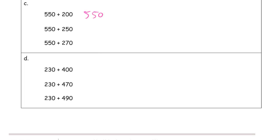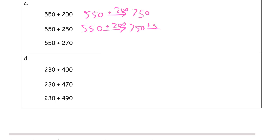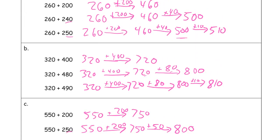550 plus 200 is 750. For 550 plus 250: add the 200 first for 750, then another 50 more. You'll see the two 50s add up to 100, so it's the rest of the way to 800.